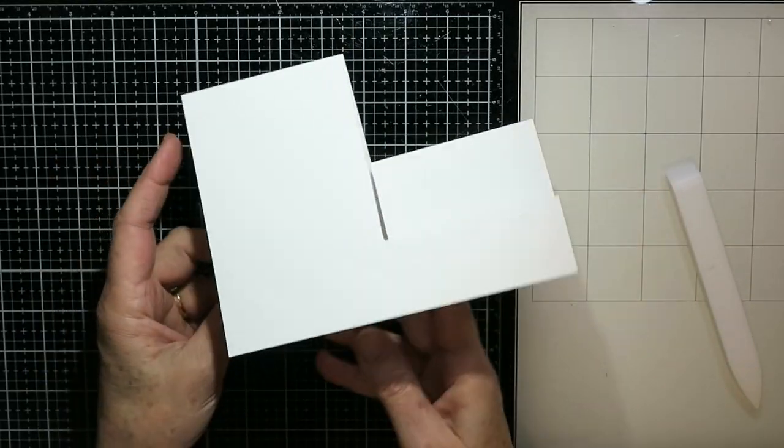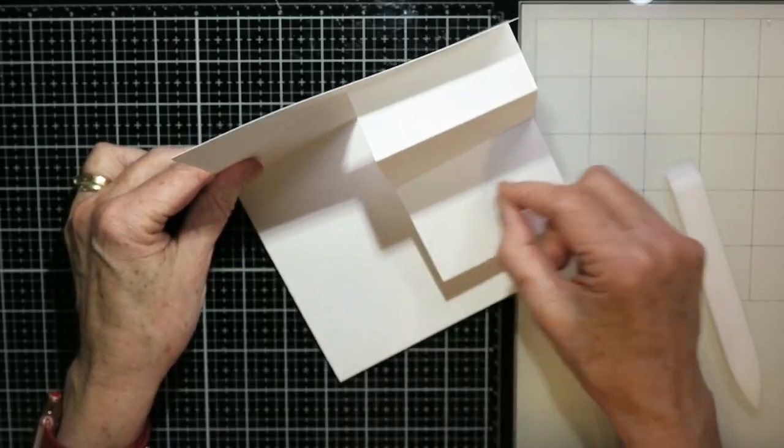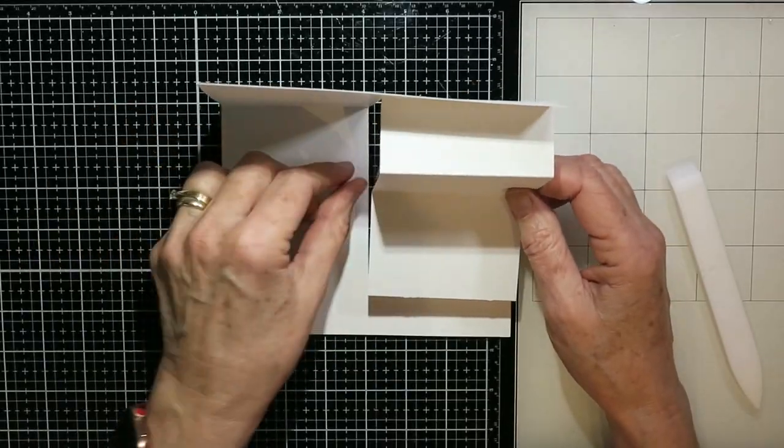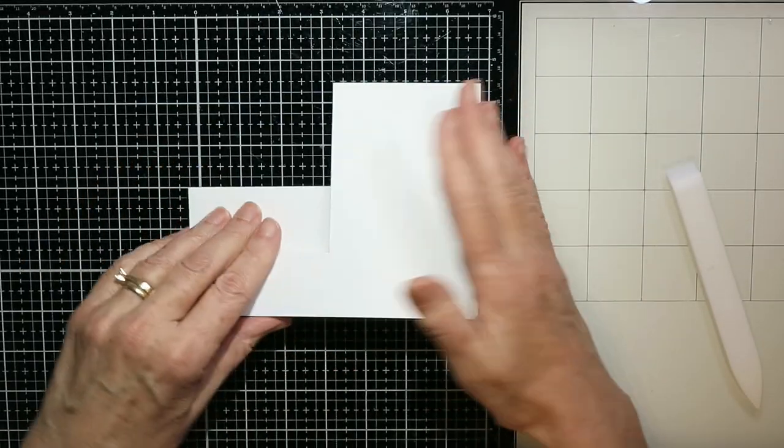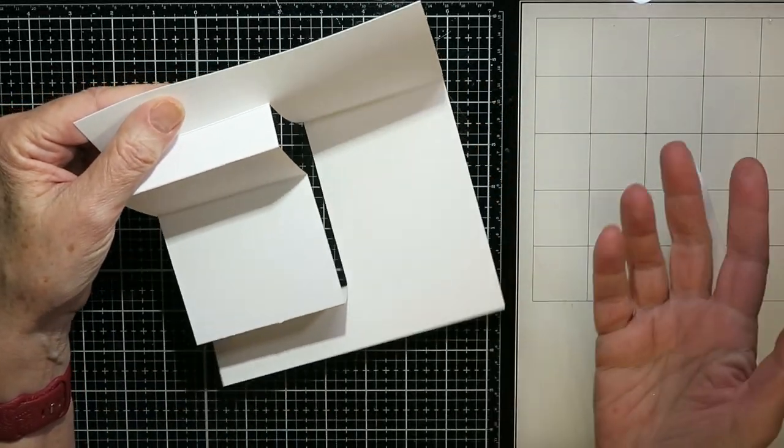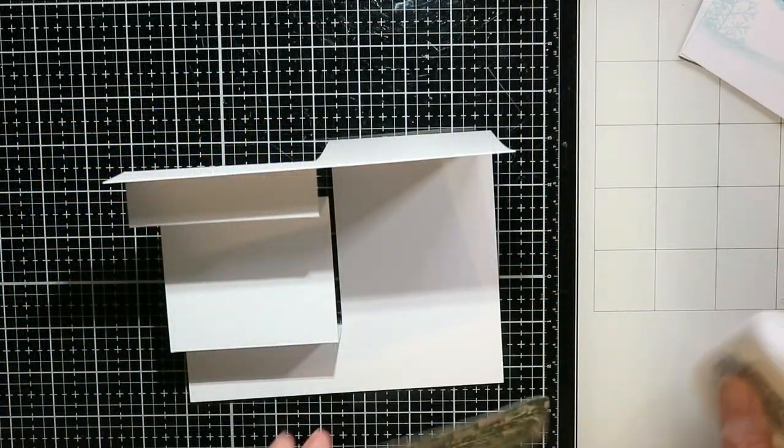And so then you can choose to have that tall side on either side. But I found if I was writing, I'm right handed. So for me, it was easier to have the tall side on the right. And so that was why I oriented mine the way I did.